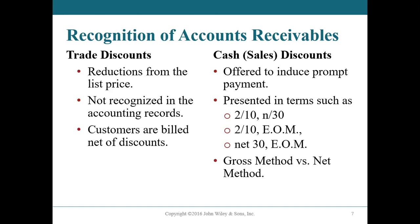Cash discounts or sales discounts do have to be recorded. Hopefully we remember terms like 2/10/N/30 — 2% off if paid within 10 days, or the net amount is due in 30 days — or 2/10/EOM meaning 2% off if paid within 10 days, or the entire amount is due end of month.